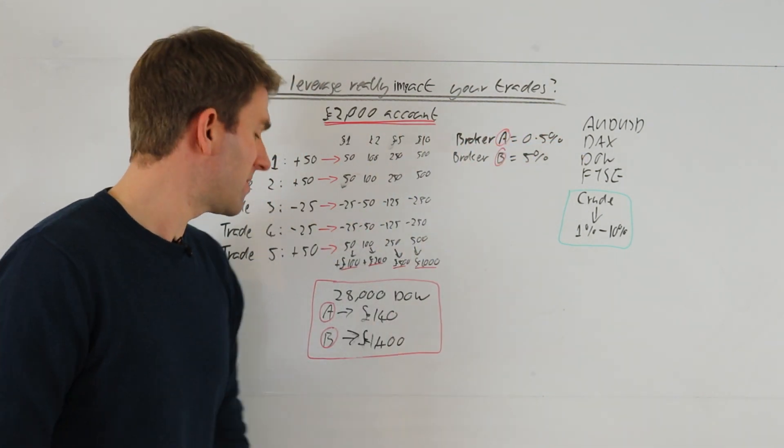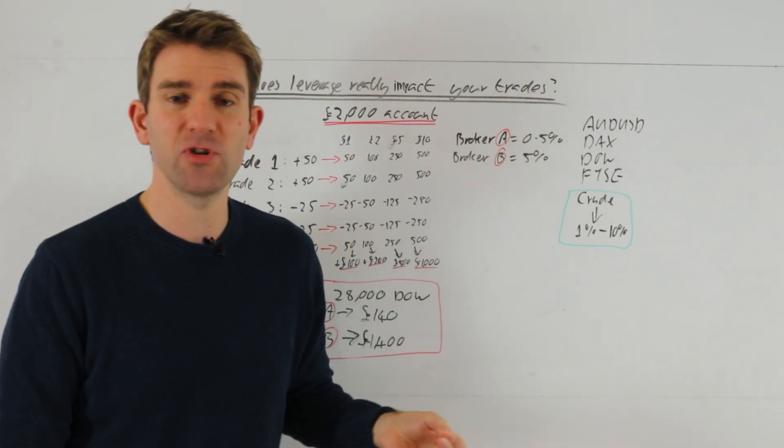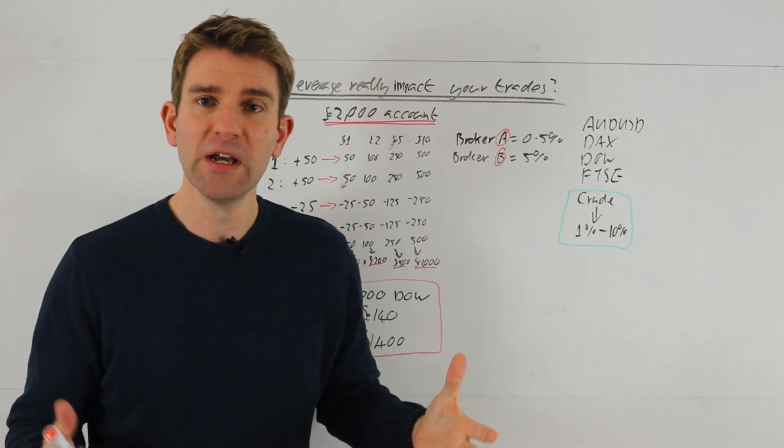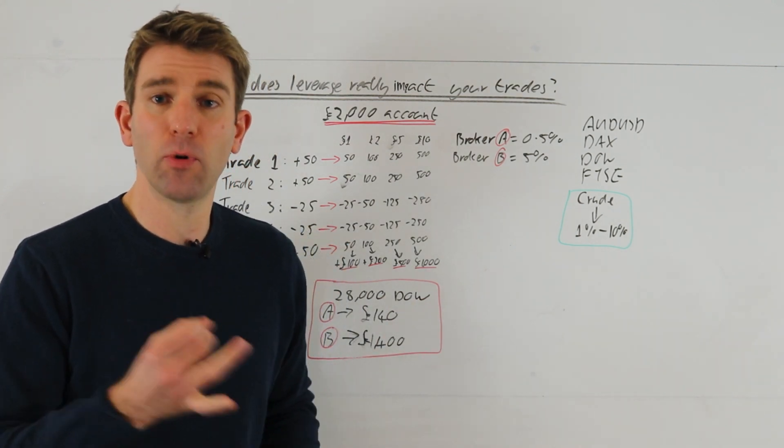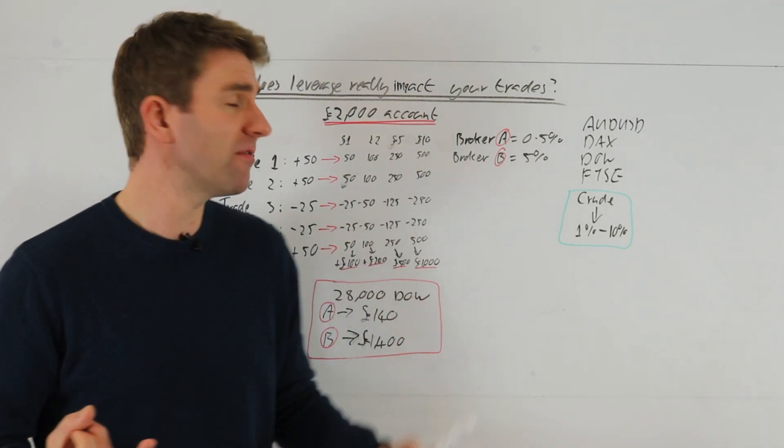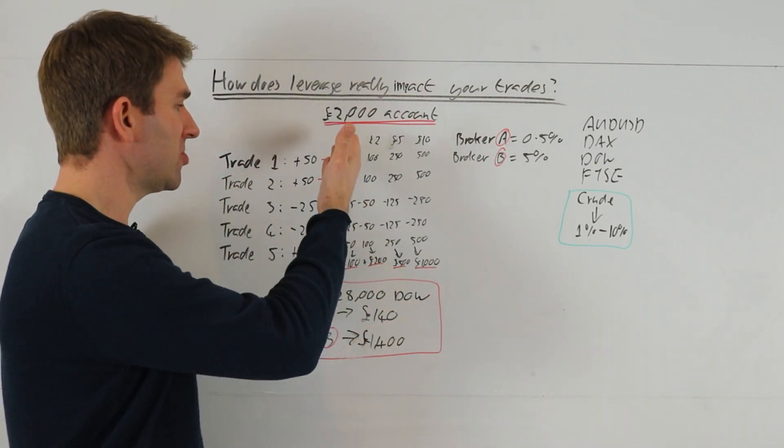Now if you're using Core Spreads Australia 0.5%, you can trade a pound a point and it's £140 in margin, obviously a tenth of the size. 0.5%, 5%, right? So if you're trading let's say a pound a point, you're restricted to that. You've got a £2,000 account, that's all you can do. You've got no room for error really. That's it, you can't do anymore. You just, that's the way you got to do it.